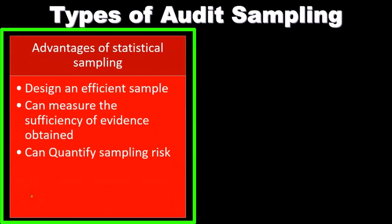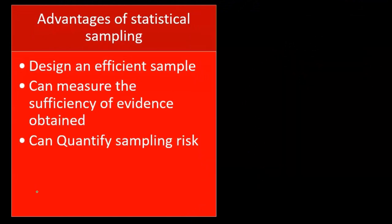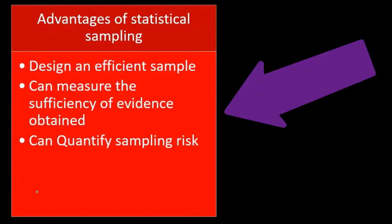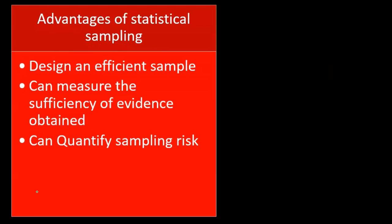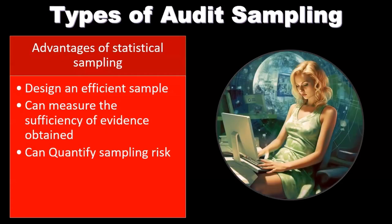The advantages of statistical sampling are: it can design an efficient sample. When we think about sample size, what we want to do is create a population as small as possible so we can do the least work needed. Statistical sampling is better at giving us a very efficient sample size, whereas without it, we would have to select a sample size that seems reasonable but would probably be overestimating the sample size, and therefore possibly doing more testing.